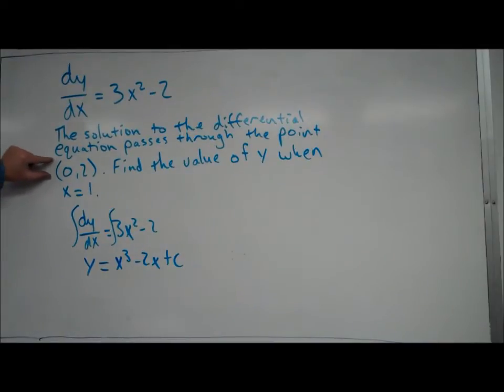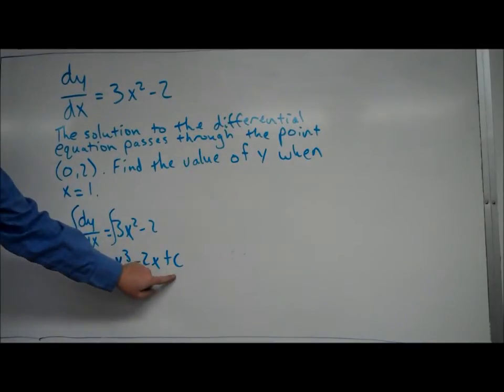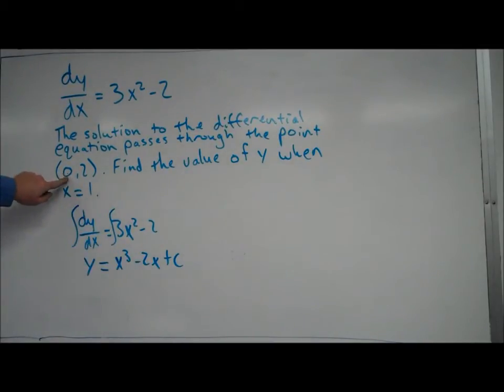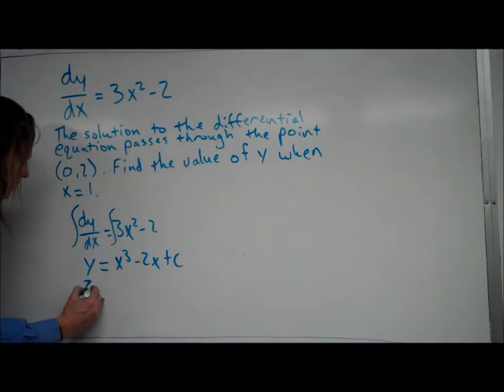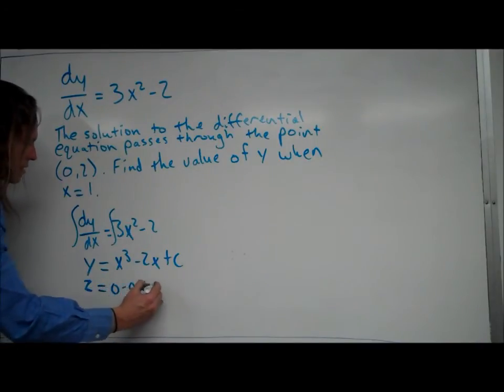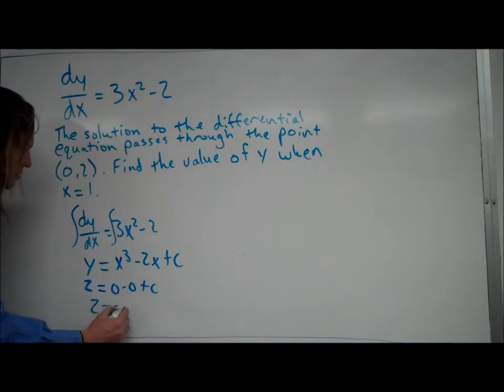Now this initial condition was given to me so I can find out what c is. What I'm going to do is take 0, plug it in for x, take 2, and plug it in for y. So I'm getting 2 equals 0 minus 0 plus c. So 2 is equal to c.